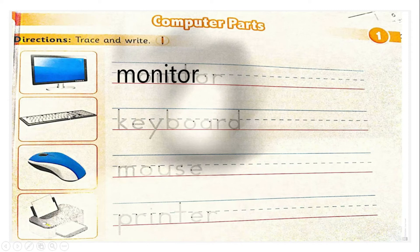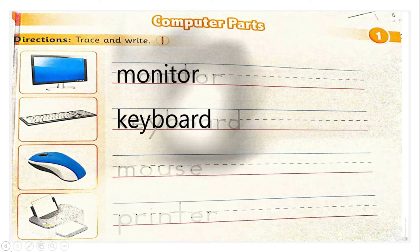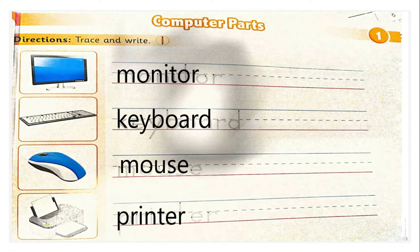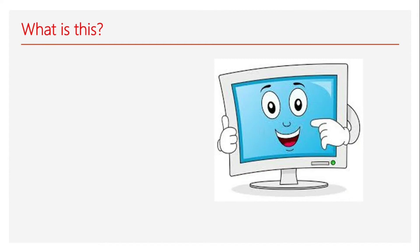What about this one? Yeah, amazing — keyboard! What about this one? Yeah — mouse! Also, what about this one? Of course you know — printer! Good girls and good boys.